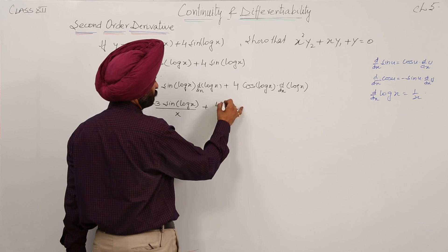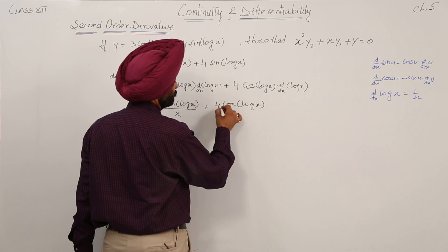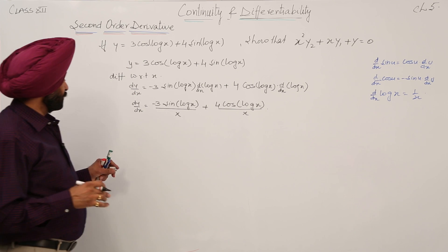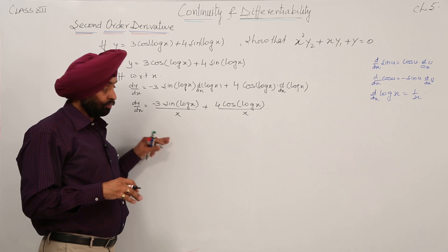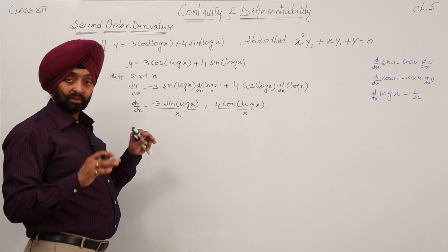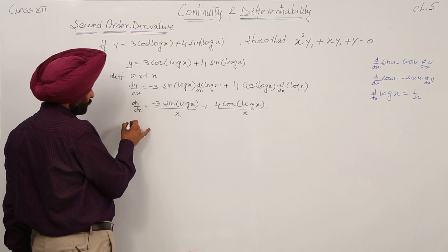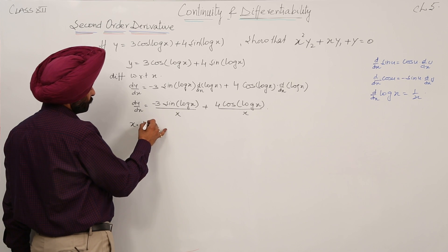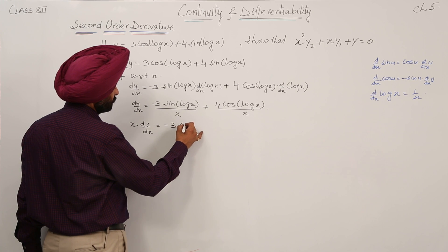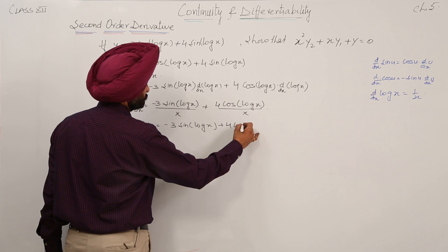Now we have to differentiate this function again. We could apply the quotient rule, but we can do it in a simpler way. Taking x as LCM, we can write: x times dy by dx is equal to minus 3 sin log x plus 4 cos log x. If you use this format it will become much easier to solve.